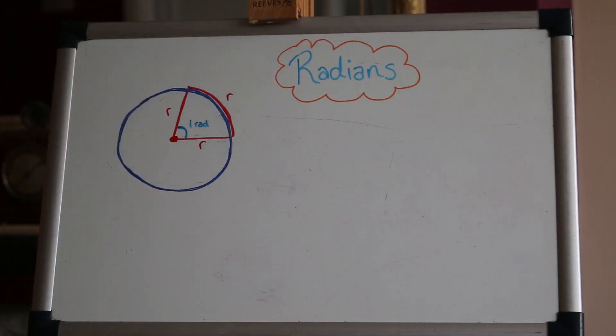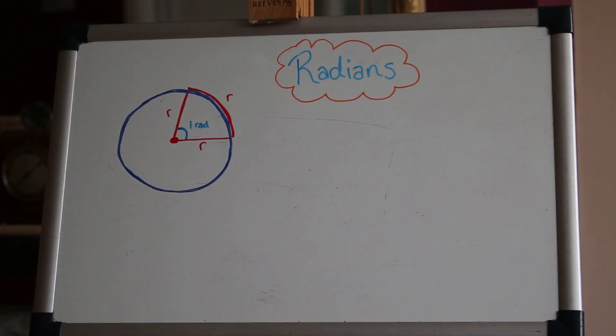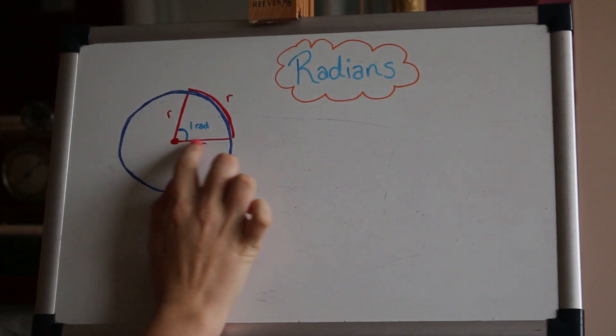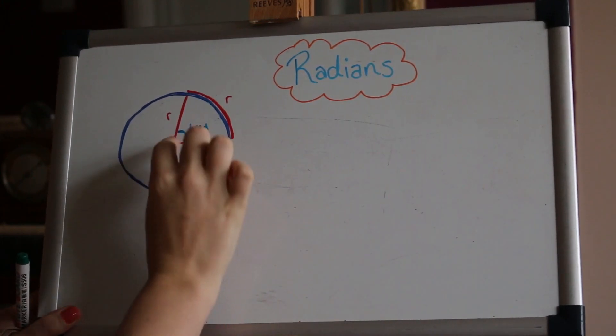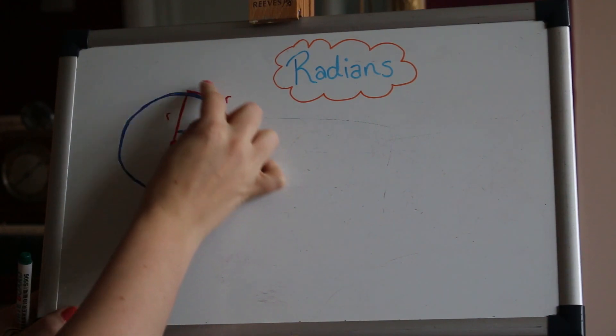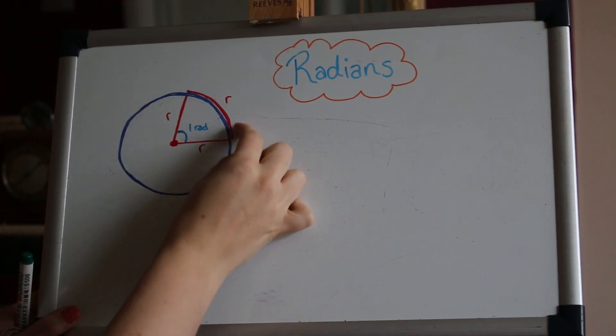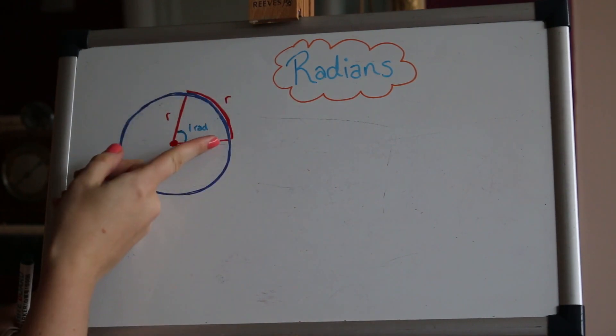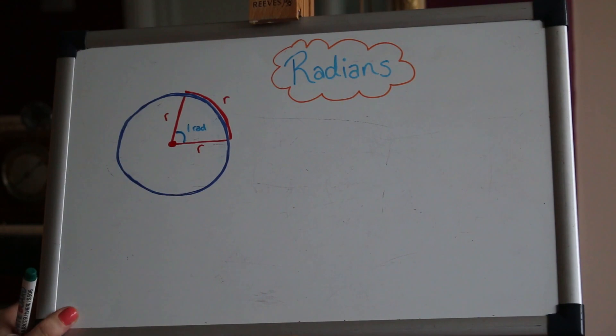You're going to have to excuse my wobbly circles in this video. I'm not brilliant at drawing them but I'll try my best. So a radian is when you take a radius of a circle and if you imagine you pick that up and place it along the circumference, so that red length there is the radius again placed along the circumference, then that angle you would turn through there would be one radian.